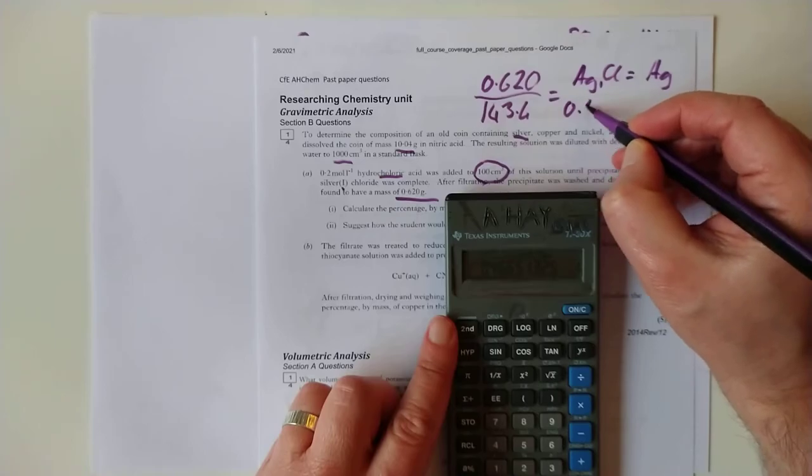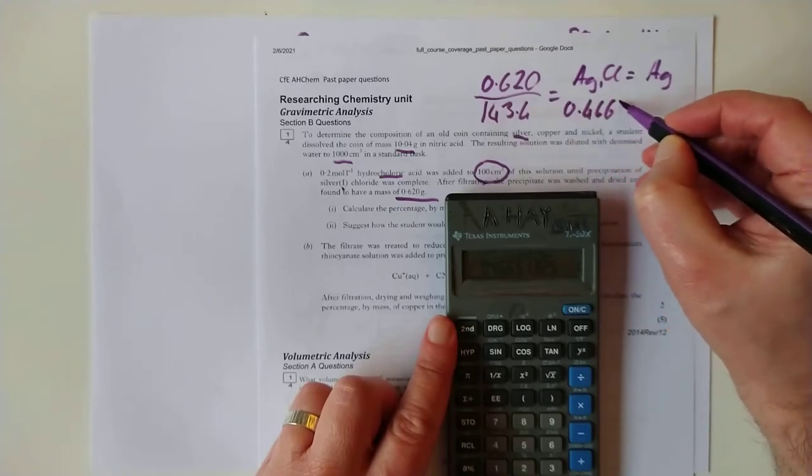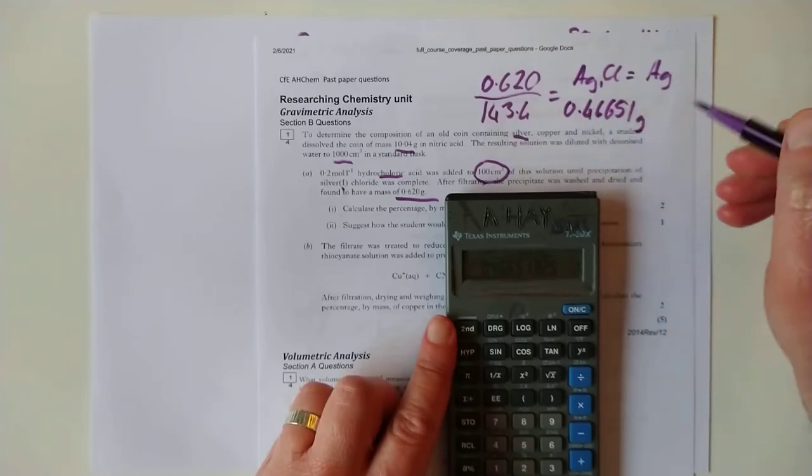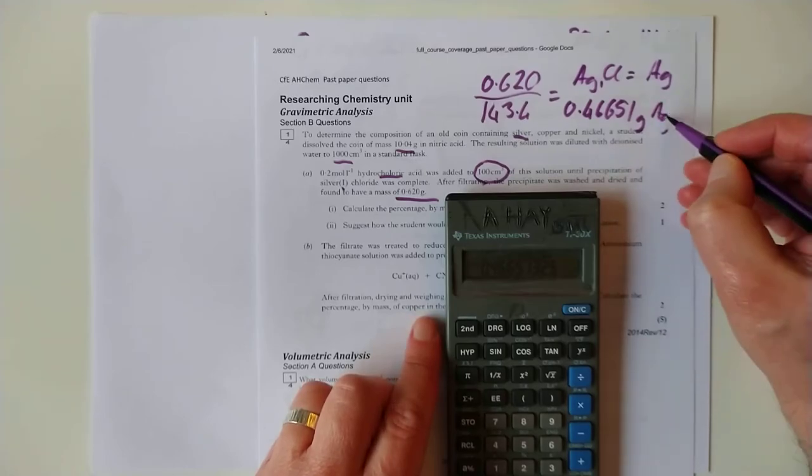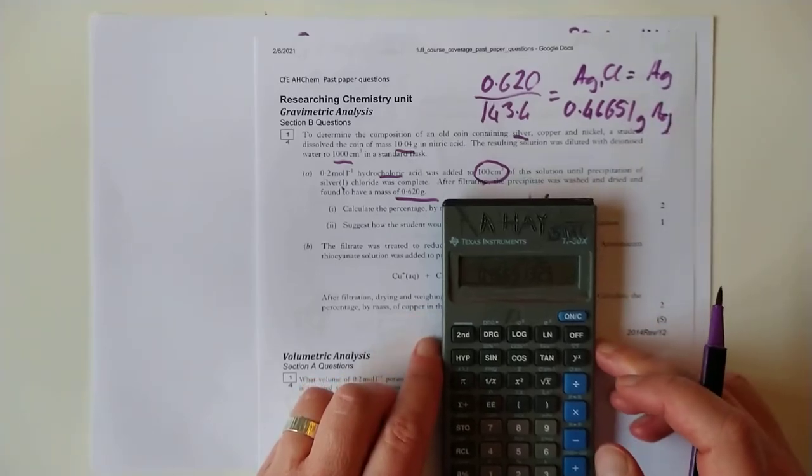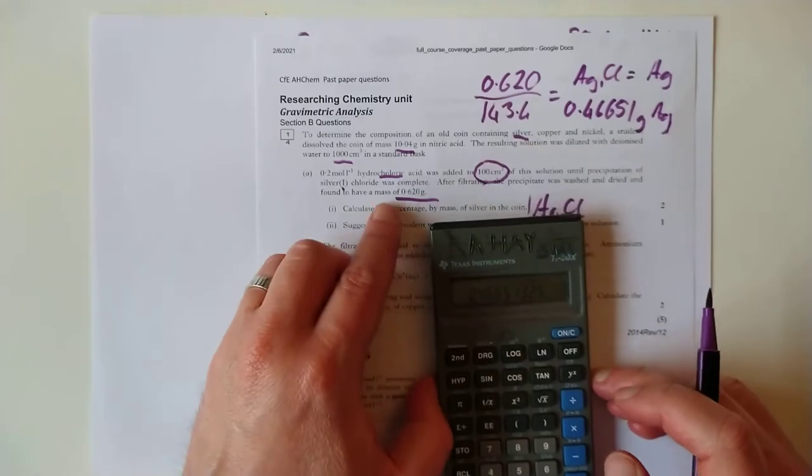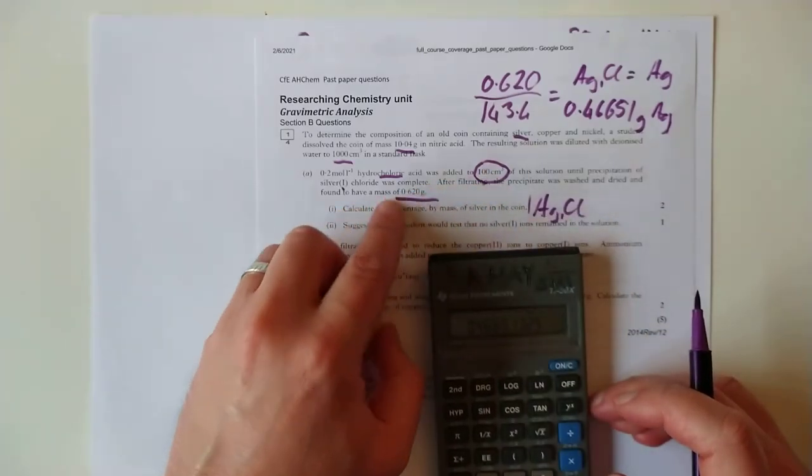So that's the moles of silver, multiply it by the GFM of silver, which is 107.9. And that's the mass of silver now. So there are 0.46651 grams of silver.